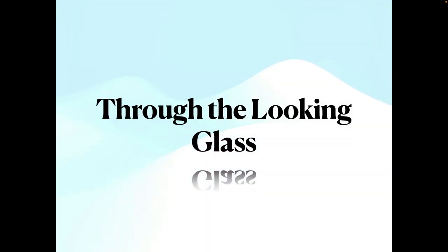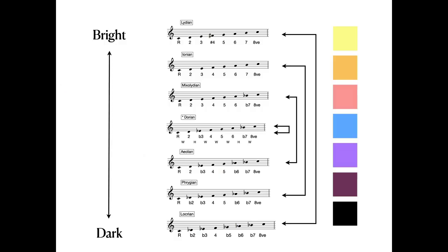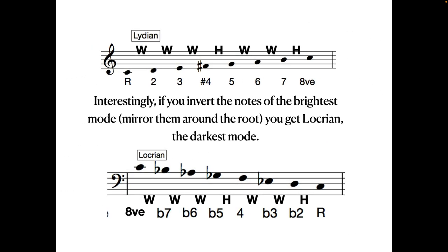There is one more perspective to look at, that of reflection. This is something I discovered in Persichetti's 20th century harmony and it blew my mind. Here are again the modes in order of brightness. Lydian at the top, Locrian at the bottom. There is one further way in which all these modes are connected. If we take Lydian, this pattern of whole and half steps, and mirror them around C, going up a step, we go down a step, and so on.